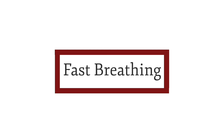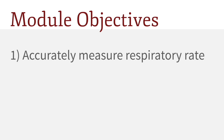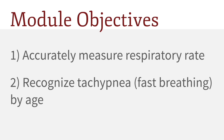Fast breathing. In this module, you will learn to recognize normal and abnormal respiratory rates in children. The first objective is to learn to accurately measure respiratory rate. The second objective is to recognize tachypnea, also known as fast breathing, by age. Note that we will use the terms tachypnea and fast breathing interchangeably throughout this course, as they have the same meaning.